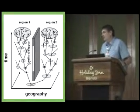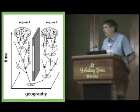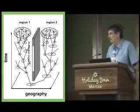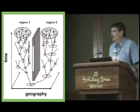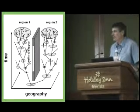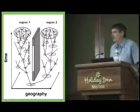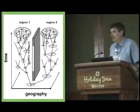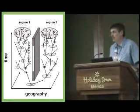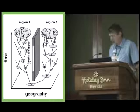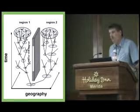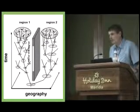Space itself is often a two-dimensional axis, so one can often project gene phylogenies or gene genealogies onto a two-dimensional spatial representation.